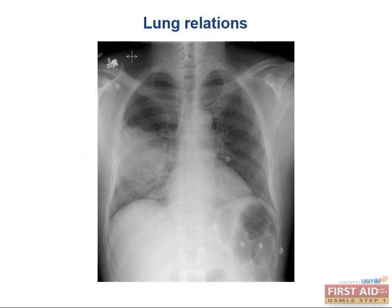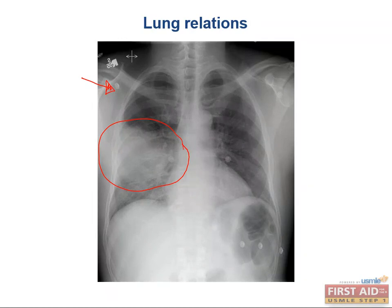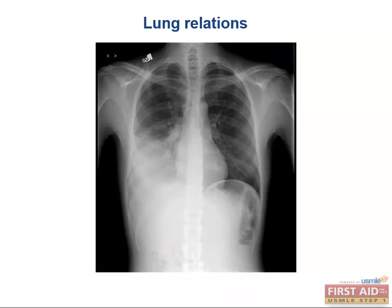Let's put this knowledge to use. What lobe does this pneumonia lie in? It's on the right side, so you have three lobes to choose from. You can tell it's not in the right upper lobe because that area is completely clear. You can tell it's in the right middle lobe because of how well it follows the horizontal fissure, and it fades inferiorly so you can clearly see the right hemidiaphragm. Because you can see the right hemidiaphragm, it's not in the right lower lobe. In contrast, this is a right lower lobe pneumonia — here you can't see the diaphragm at all, and the superior lung space looks totally clear.